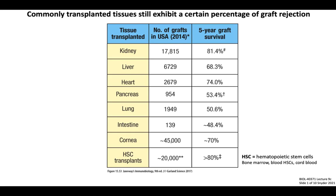This table summarizes data from the most common transplantation surgeries performed in the United States in 2014. Some organ transplants, such as hematopoietic stem cells and kidneys, are much more common than others, like intestine or pancreas. Graft survival rates vary amongst organs as well. Viable donor organs are relatively difficult to obtain, and even following a successful transplantation surgery, there is still a reasonable likelihood of graft rejection within five years. This highlights the importance of understanding the mechanisms of graft rejection to help direct novel therapies that could improve graft survival.